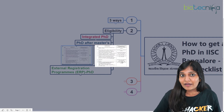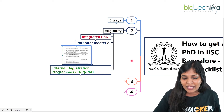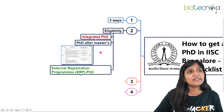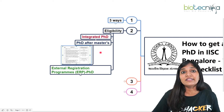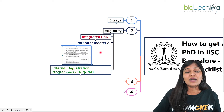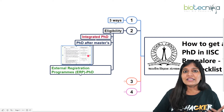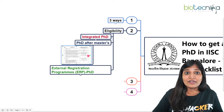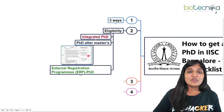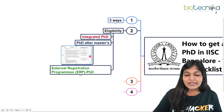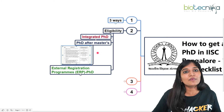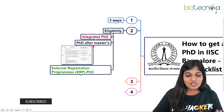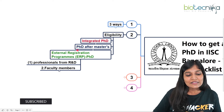If you are from MSc in Life Sciences — such as Microbiology, Biochemistry, or Molecular Biology — you need to have cleared any national level examination: CSIR NET, UGC NET, DBT, ICMR JRF, or at least a DST INSPIRE provisional offer which is valid. Without any national level examination, you will not be eligible to attend the interview after your master's.